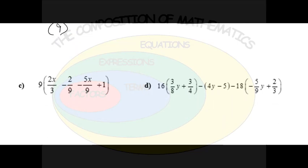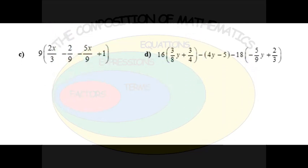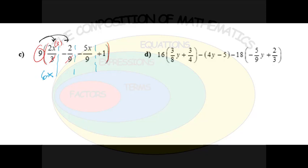Going on to the next — we just want to keep track of our composition. Here we notice that we have four terms in parentheses, so we're going to distribute that 9 to all four terms. As I distribute the 9 to the 2x over 3, the 3s cancel leaving a factor of 3, so 2x times 3 is 6x. Then the 9 gets distributed to the negative 2 ninths — the 9 in the denominator cancels with the 9 we're multiplying by, leaving negative 2.